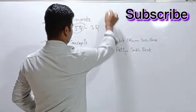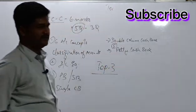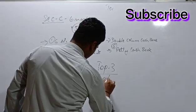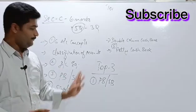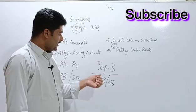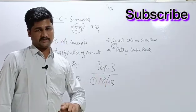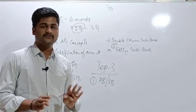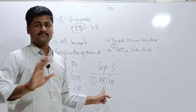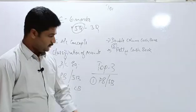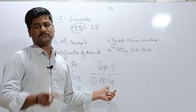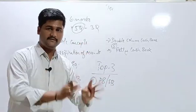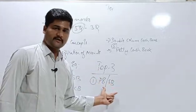For top three questions in Section C: Number one — go for purchase book or sales book. It is very easy. The condition is: it must be a credit purchase or credit sales, and it must involve goods. Cash purchases are not recorded in the purchase book. Similarly, credit sales of goods go in the sales book. Very, very easy — credit transaction of goods only.